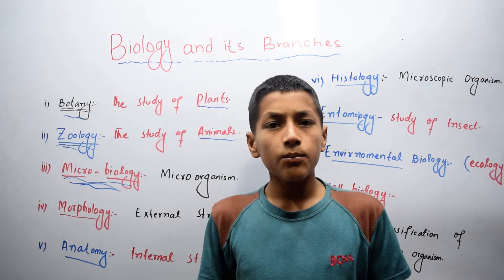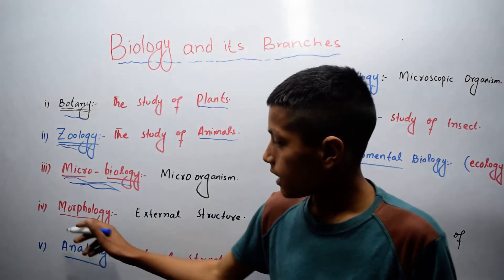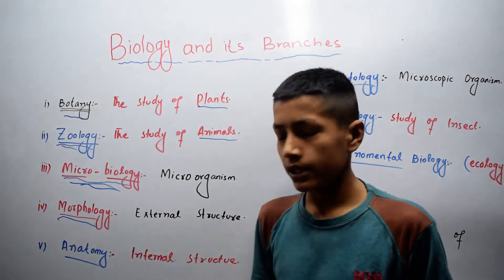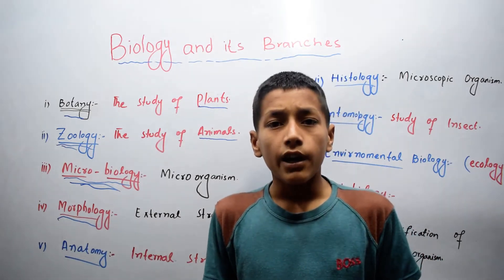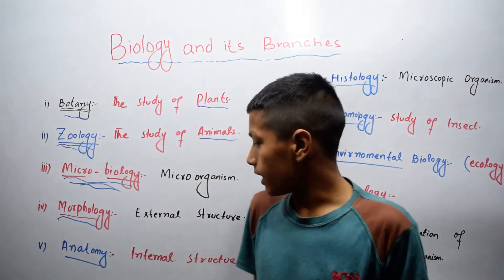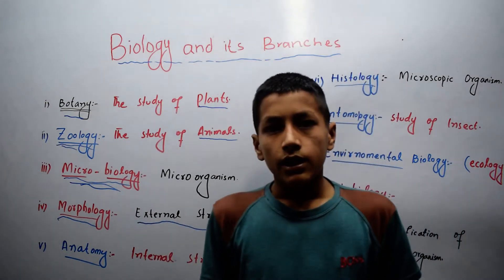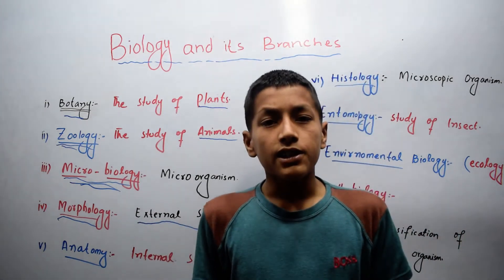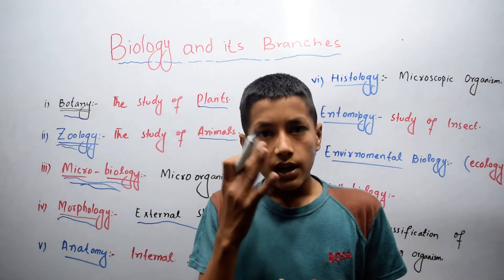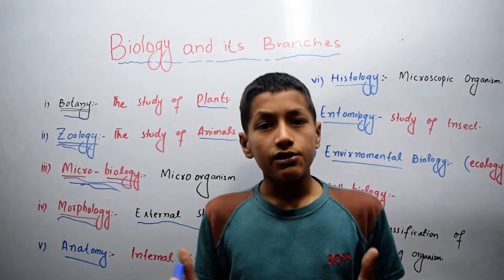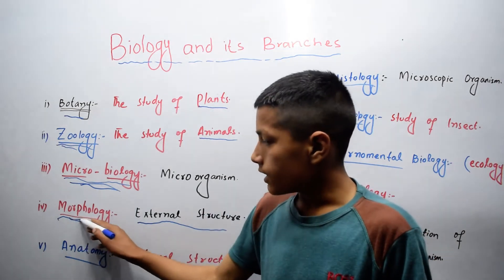Let's come to the fourth branch of biology, which is morphology. It is the branch of biology in which we deal with the study of the external structure of organisms. External structure means nose, eye, etc. So it's called morphology.